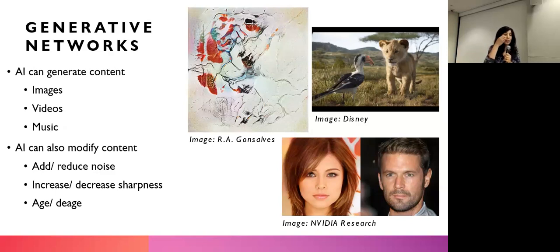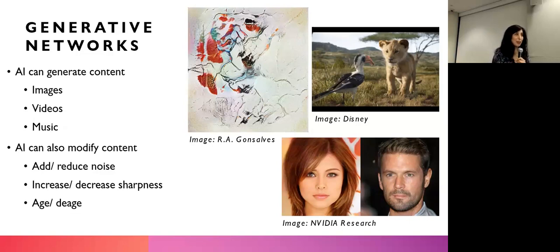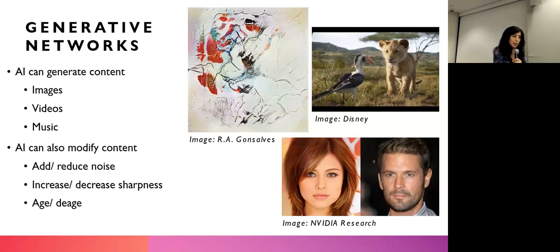AI can also modify content — it can add or reduce noise, increase or decrease sharpness, age a person or de-age a person. People have seen these filters all over; you can see what you would look like 10 years older or 10 years younger. All of these are really fun modifications to make to your image. But you start to get nervous when a person can pretty accurately impersonate another individual.